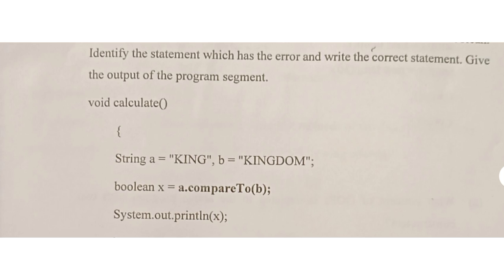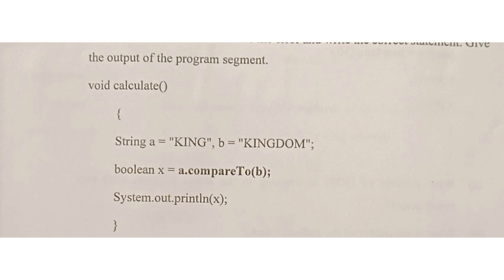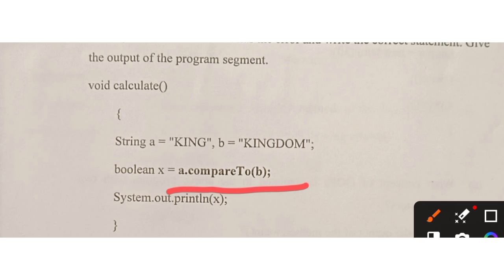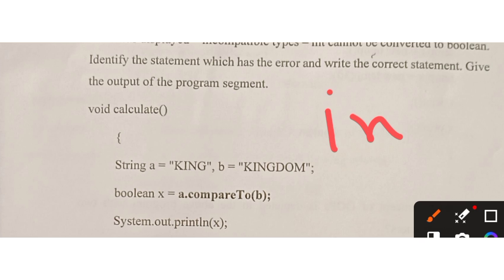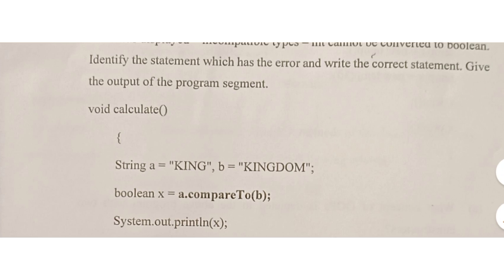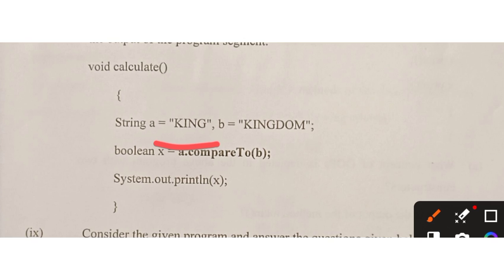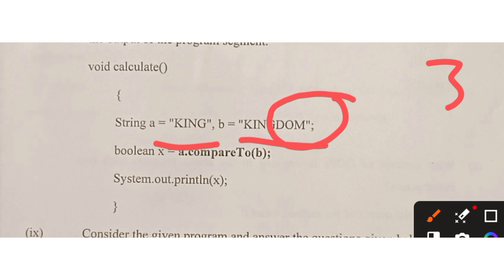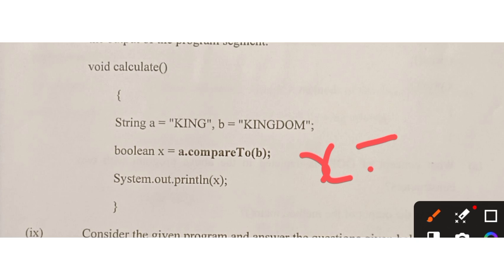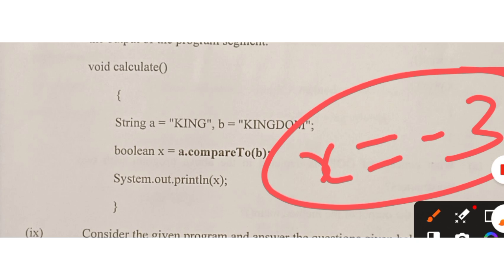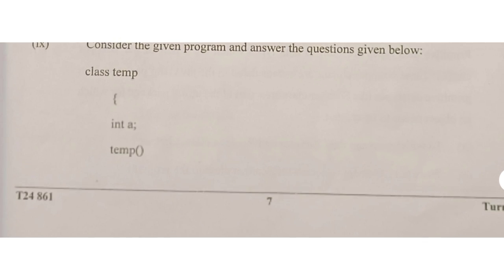Section B question eight: identify the error and give the output. The compareTo() method returns an integer, not a boolean, so the data type should be 'int x' instead of 'boolean'. Corrected: int x = king.compareTo(kingdom). The first four letters of both strings are the same; the extra letters in 'kingdom' are 'dom' — three extra letters. Since 'king' is the first argument and 'kingdom' is the second, the output x = -3.